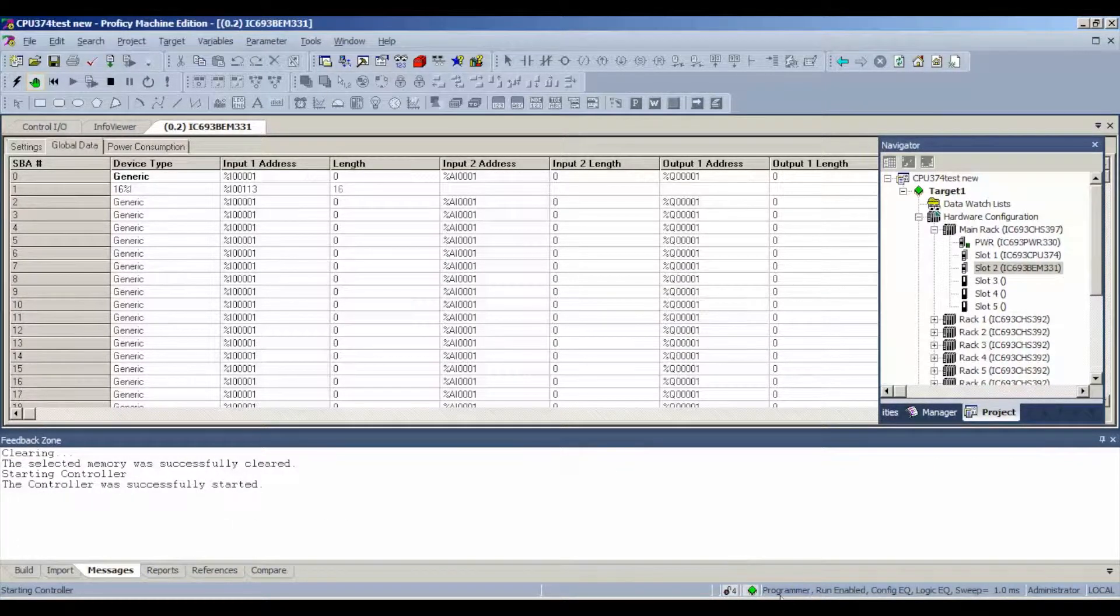We want to start the controller and enable the outputs. If you look down below, you should be in programmer mode. The processor should be in run mode. The inputs and outputs are enabled. Configuration and logic are equal. Your processor, of course, should also be in run mode. This will work with other processors, of course, but the facts stay the same. It should still be reading like this.